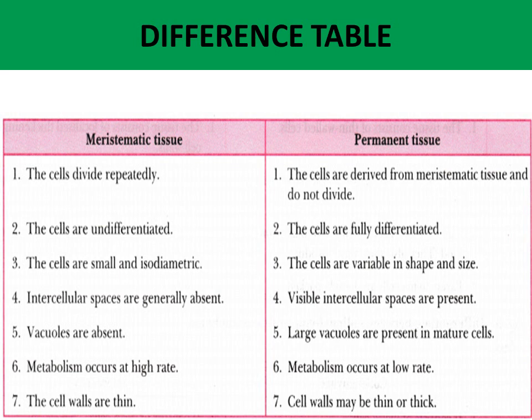Difference three: in meristematic tissue the cells are small and isodiametric; in permanent tissue the cells are variable in shape and size. Difference four: in meristematic tissue intercellular spaces are generally absent; in permanent tissue visible intercellular spaces are present. Difference five: in meristematic tissue vacuoles are absent; in permanent tissue large vacuoles are present in mature cells.